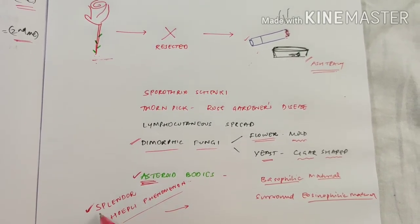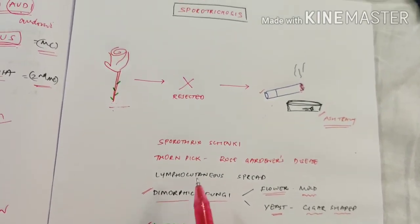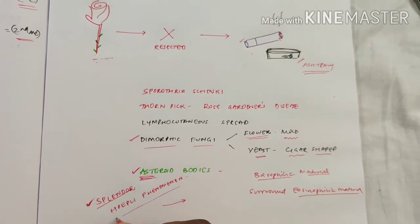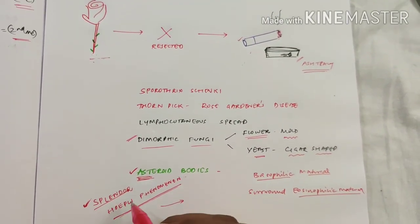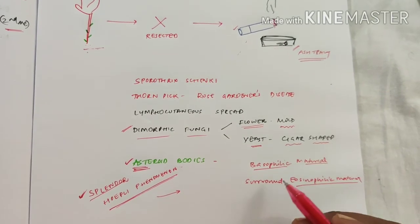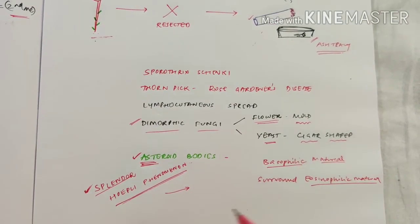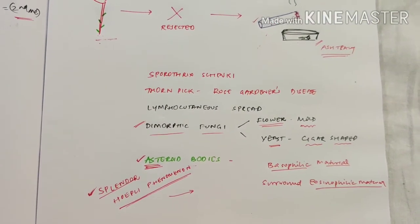I told you that you used to roam on your father's bike which is a Hero Splendor, so this sporotrichosis shows Splendor-Hoeppli phenomenon. What is Splendor-Hoeppli phenomenon? Nothing but basophilic material surrounded by eosinophilic material.